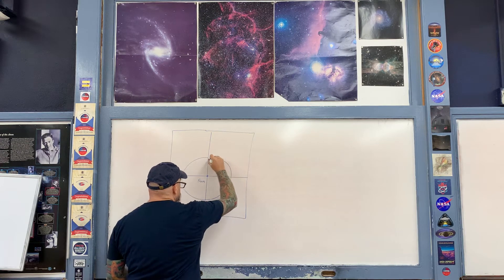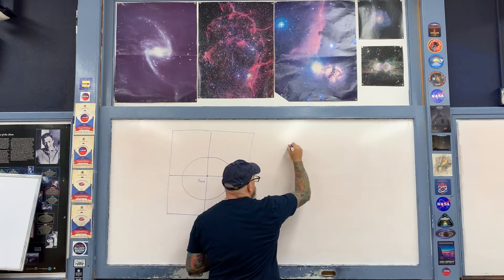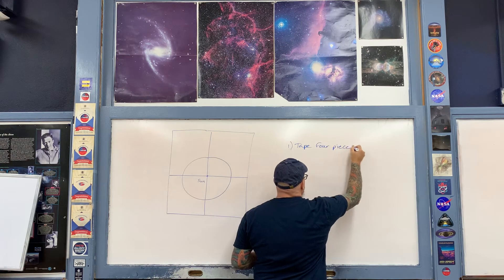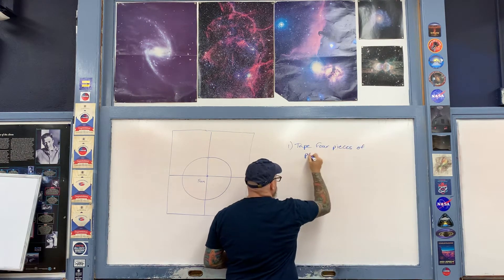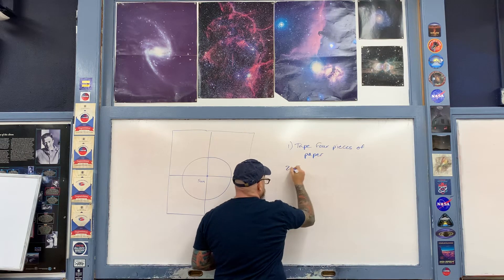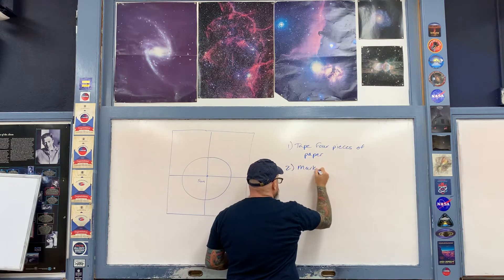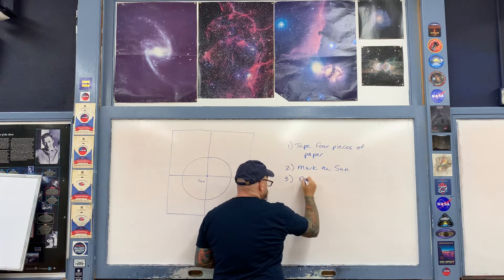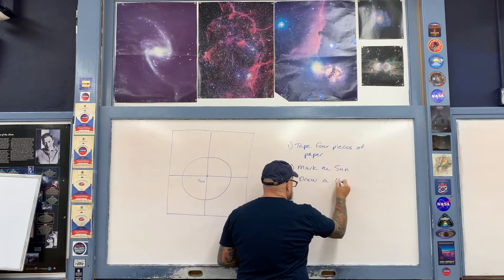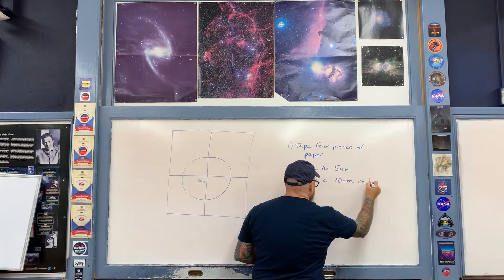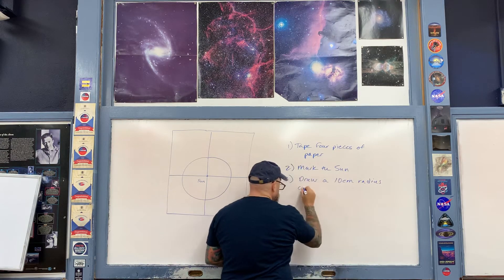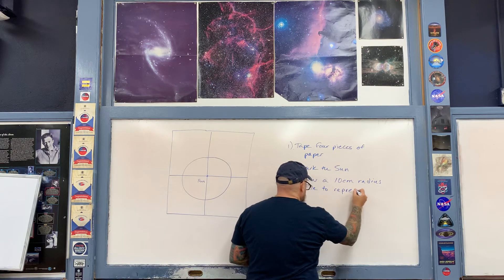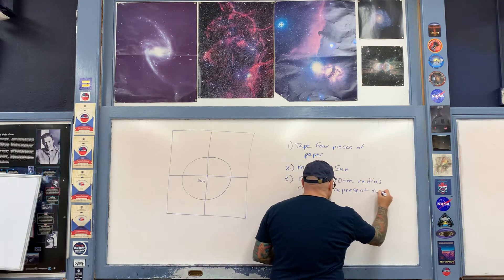So to summarize the first steps: tape four pieces of paper together, mark the sun at the intersection, and draw a 10-centimeter radius circle to represent the Earth's orbit.